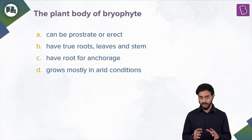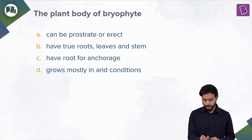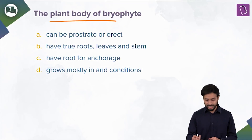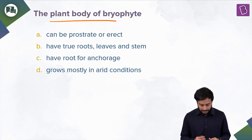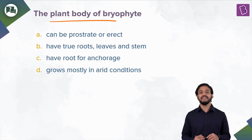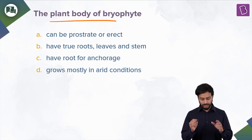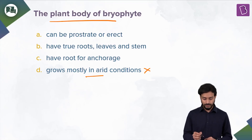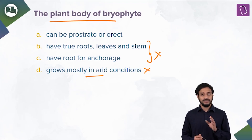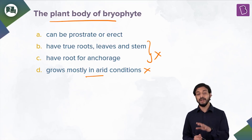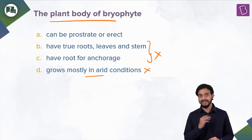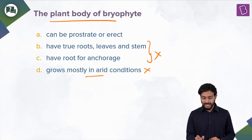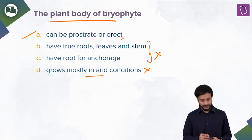If you've understood bryophytes, this next question will be easy. The plant body of bryophyte: can be prostrate or erect; has true roots, leaves and stem; has roots for anchorage; grows mostly in arid conditions. Let's figure out the answer. 'Grows mostly in arid conditions' — no, they grow in moist areas; they require moisture. 'Have true roots, stems and leaves' — wrong, because bryophytes do not have a differentiated plant body. They have a thallus — undifferentiated plant body. 'Can be prostrate or erect' — yes, this is true, and is the right answer.